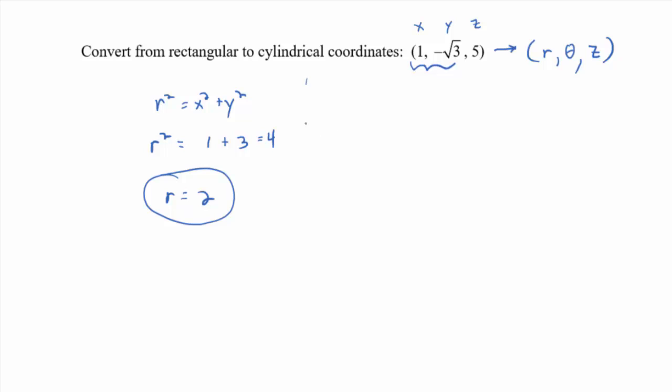Now, what about theta? Theta. Tangent of theta equals, so that would be negative root 3 over 1. Did I use degrees or radians in the answers? I don't remember. I used radians, okay.